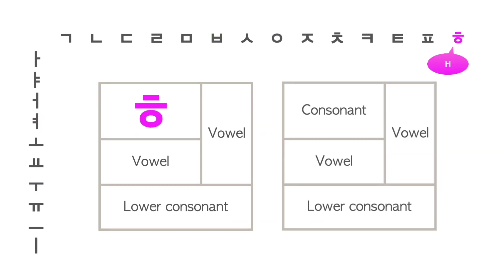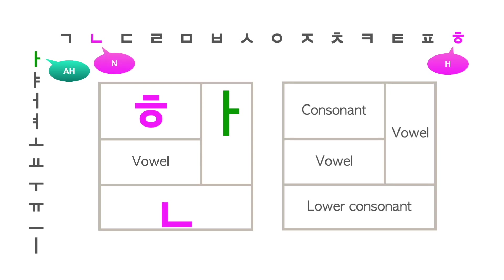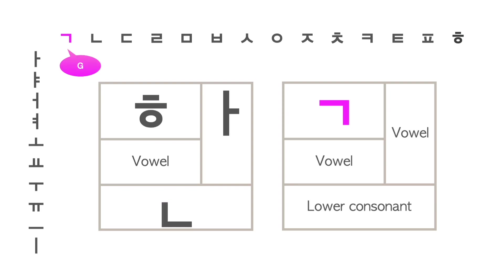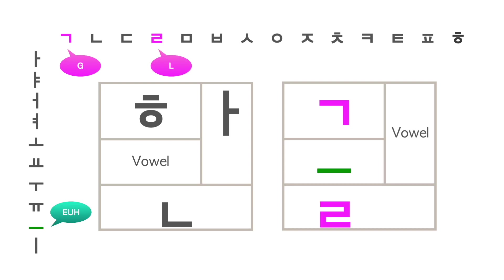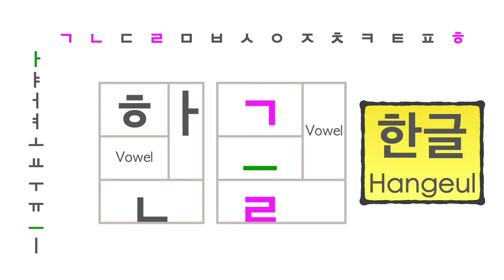This is the consonant 히읗, which makes the H sound. Putting together the vowel 아 with H gives 하, and adding a lower consonant 니은 makes it 한. The consonant 기역 is for the G sound — adding the vowel 으 to 기역 makes 그, and putting a lower consonant 리을 makes it 글. Together, this sounds 한글, which means Korean alphabet.